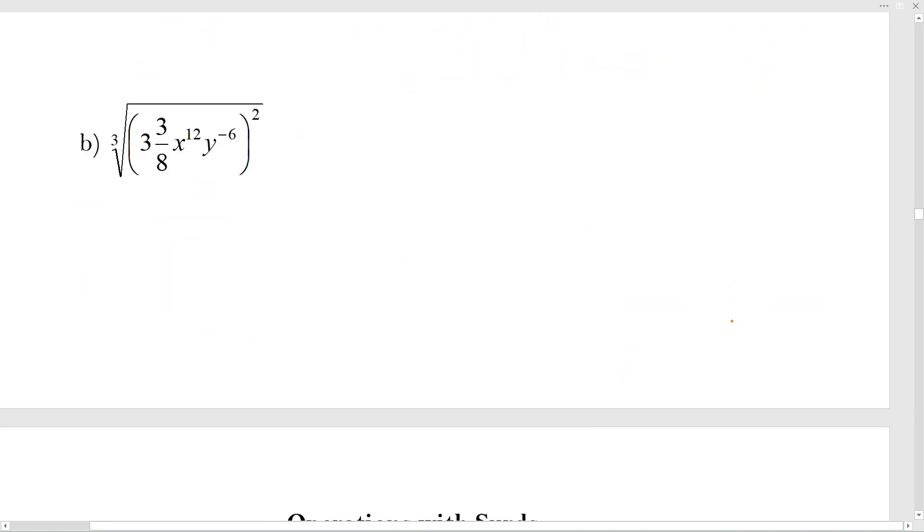For the next question we've got a bracket, then the bracket has the power of two, then the bracket has the root of three, and inside here we've got something really awkward - we've got 3 and 3/8. Please be careful with the fraction button here: that is not 3 times 3 over 8, that is 3 and 3/8. You can use your mixed number button to change it into an improper fraction.